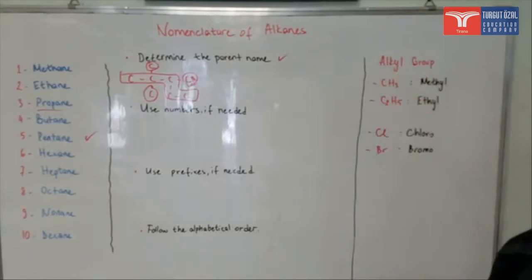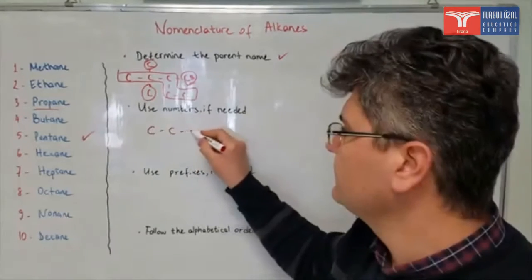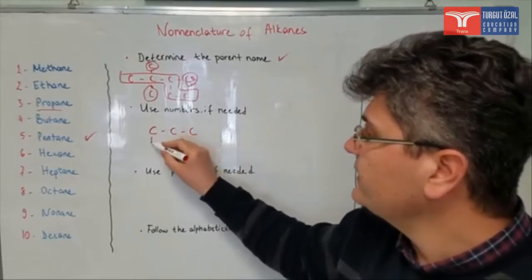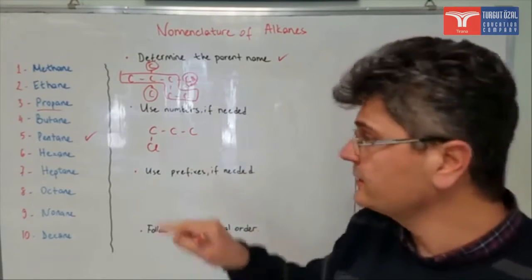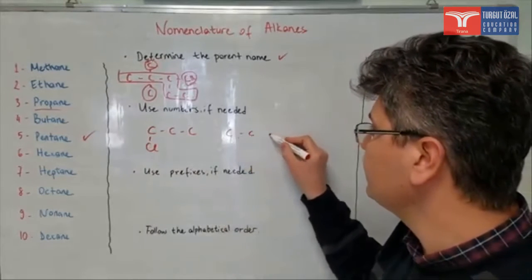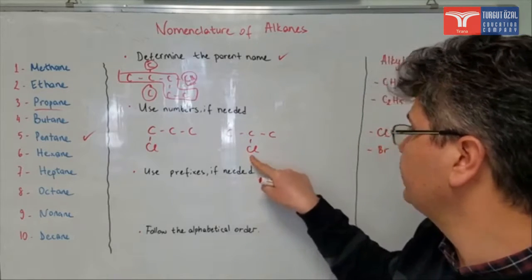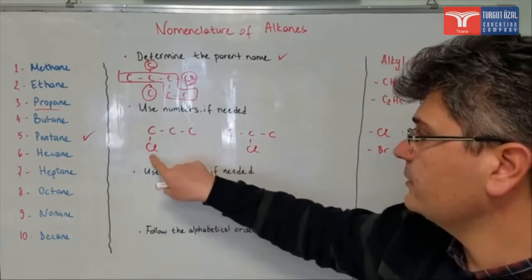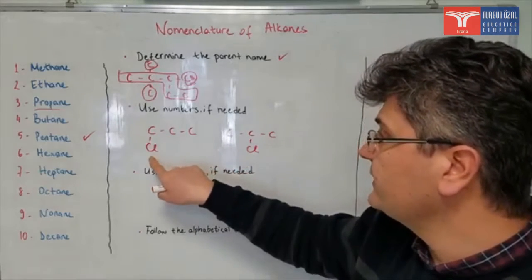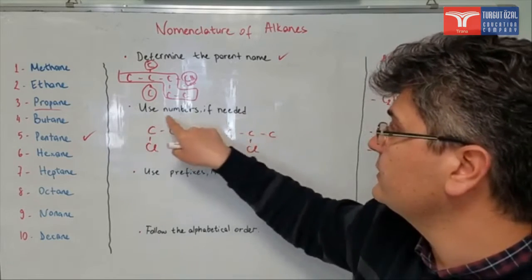First rule says determine the parent name — we have determined that. But determination of the parent name is sometimes not enough. Consider this example: you have three carbon atoms, all single bonds, so it is propane. If you say you have a chlorine here, it's going to be chloropropane. But if you try to name this other compound, it's again propane and you have chlorine, so it's again chloropropane. But are they the same compounds? They're not — in one, chlorine is attached to the first carbon atom; in the other, it's attached to the second carbon atom. So in such a case, we need to use numbers.